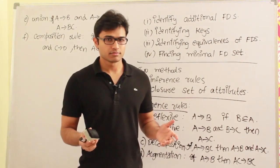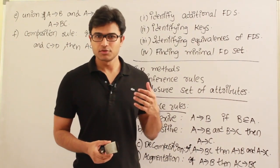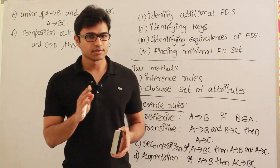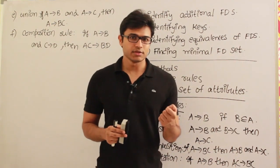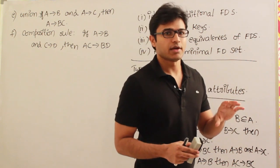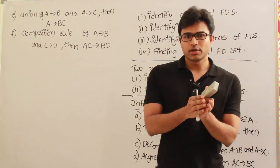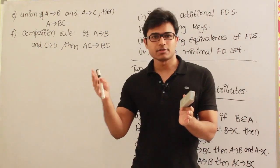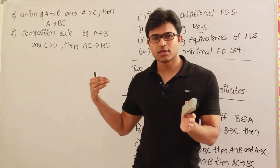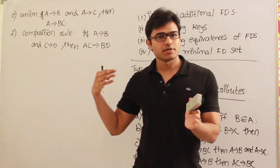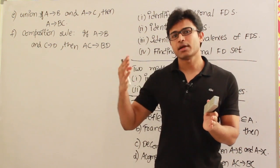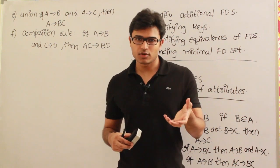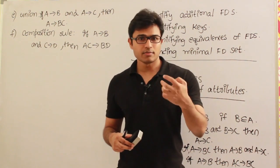Using the semantics of the database, during the requirement analysis phase when we talk to the customers, we are going to form some functional dependencies. For example, using the student ID, we may say every student ID determines student name, address, phone number, and so on. So the meaning — semantics — gives us the basic set of functional dependencies.